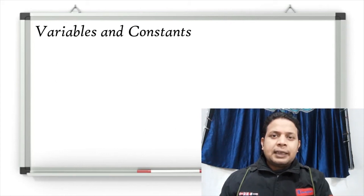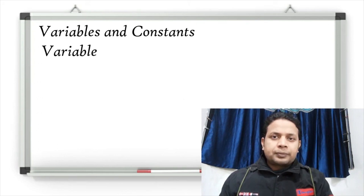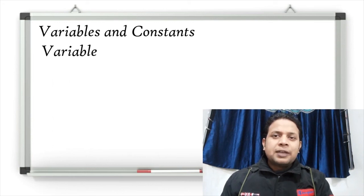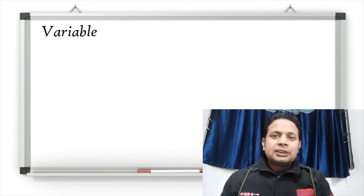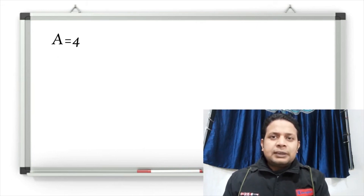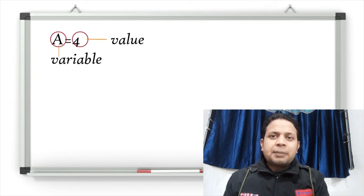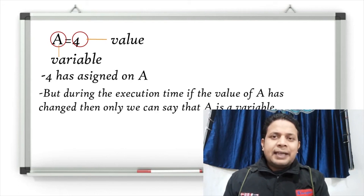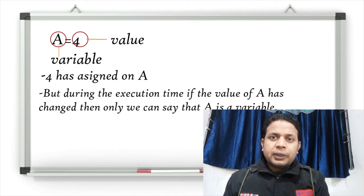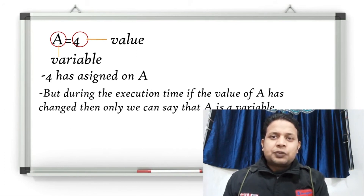Here you can see the topic: variable and constant. I'll explain variables first. What is a variable? Here is an example: a equals 4. That means 4 has been assigned to the variable 'a'. So 'a' is a variable and 4 is its value. If the value of 'a' changes during program execution time, it is called a variable — it is changeable. First it is 4, but later it can be changed to 5, 6, 7, 8, etc.